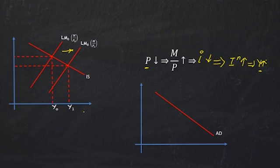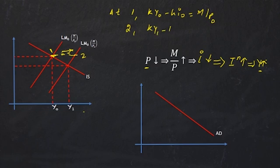Let's understand the shift of the curve. What is the gap between 1 and 2? What is the magnitude of the shift? At 1, the equation is K Y₀ minus H I₀ is equal to M by P₀. Now, at 2, our Y is different. Our I is same and our P is different. So, if you subtract the 2, you get K change in Y is equal to change in M by P.